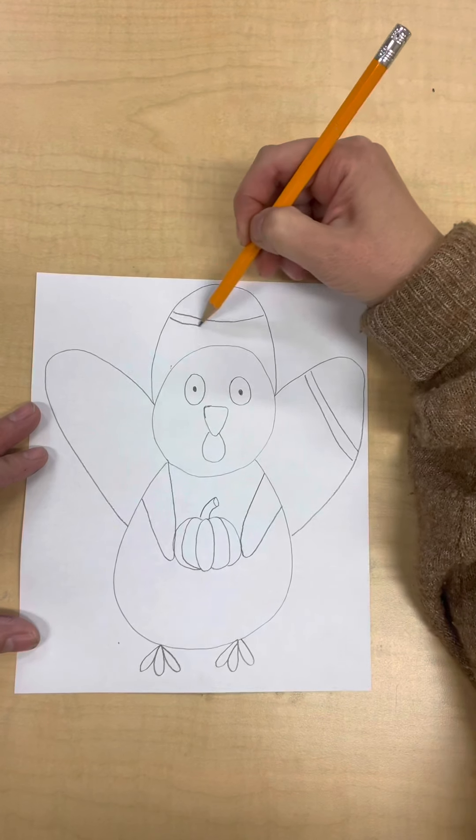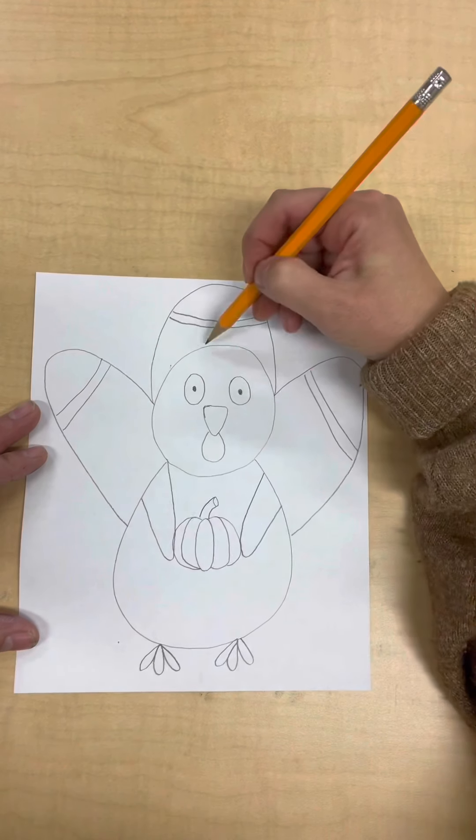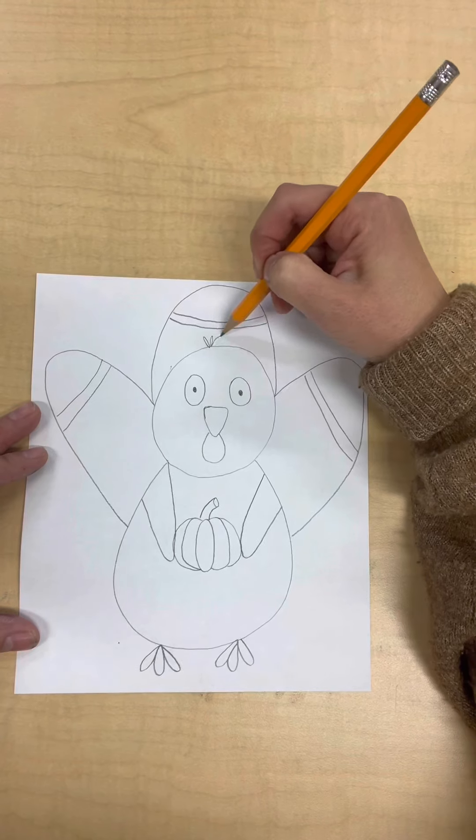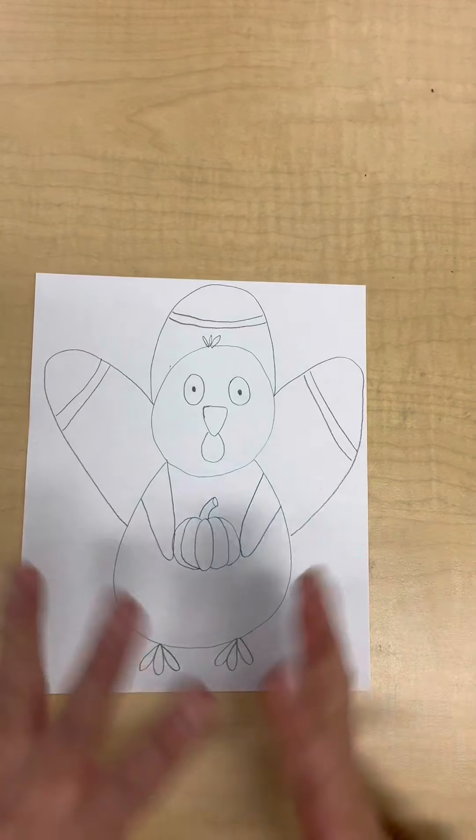I'm going to put some detail lines on his wings so we can add some color, and then I'm going to give him like a little tuft of hair for some character. And that is our drawing.